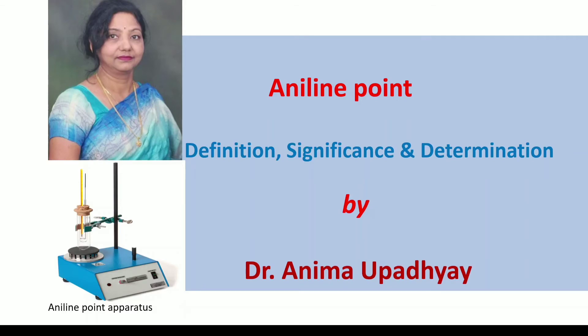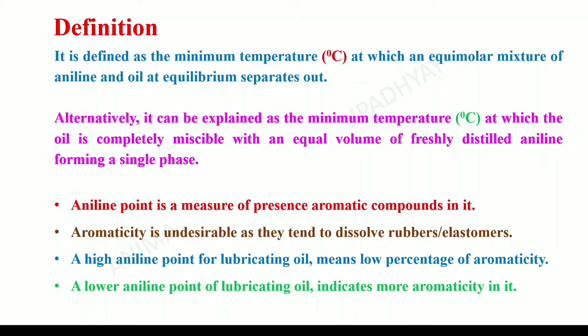Let's begin with the definition of aniline point. Aniline point can be defined in two ways. In the first definition, it is defined as the minimum temperature at which an equimolar mixture of aniline and oil at equilibrium separates out — that is, when a mixture of aniline and oil in equal volume is taken and the temperature at which the layers from the mixture separates out is recorded as aniline point. In the second definition, aniline point is explained as that minimum temperature at which the oil is completely miscible with an equal volume of freshly distilled aniline forming a single phase.